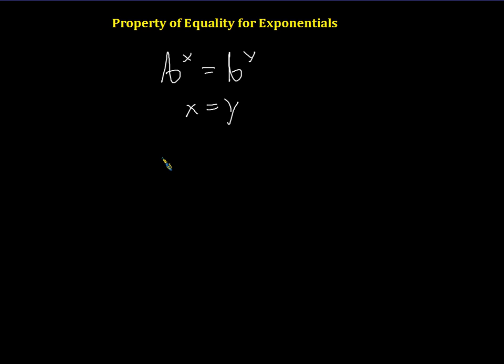It turns out if we have something like this, like 2 to the power of x, and that equals 2 to the power of 3, it turns out that we can just say, very simply, that x equals 3. That's not too horrible. Hopefully that makes sense to you.